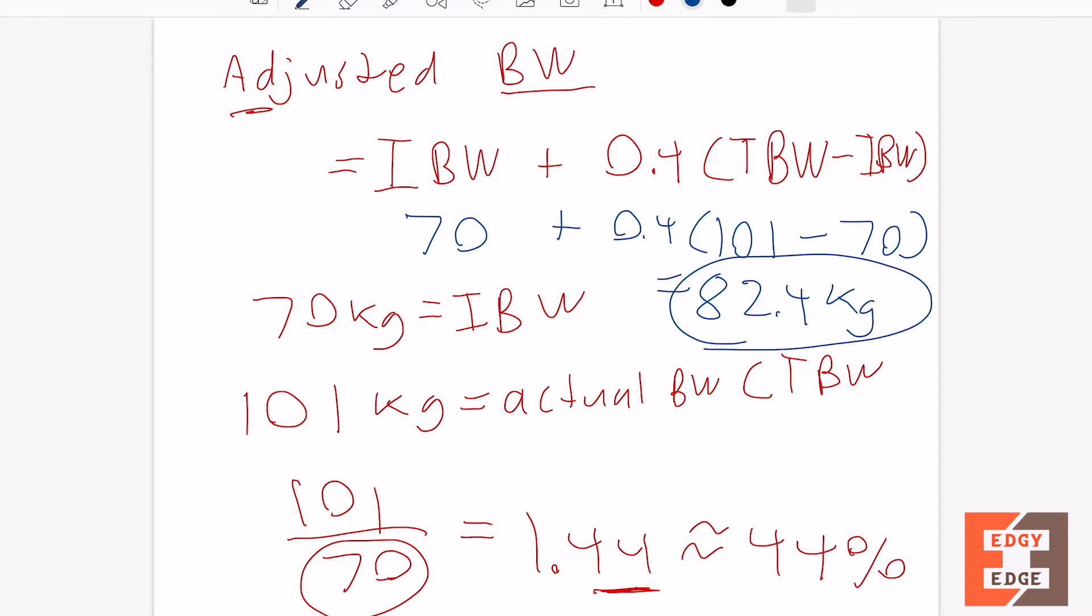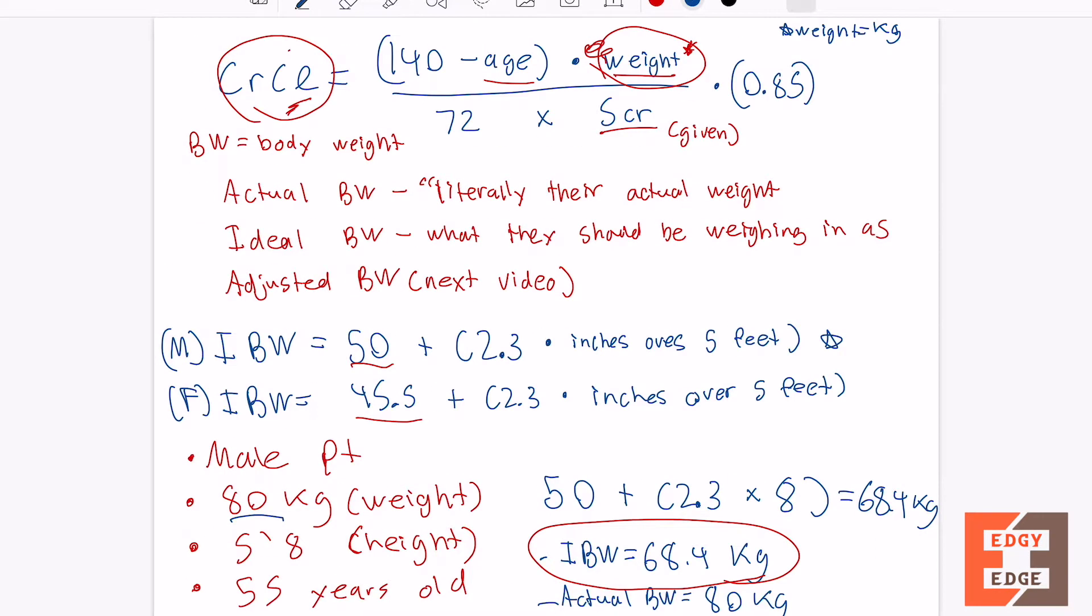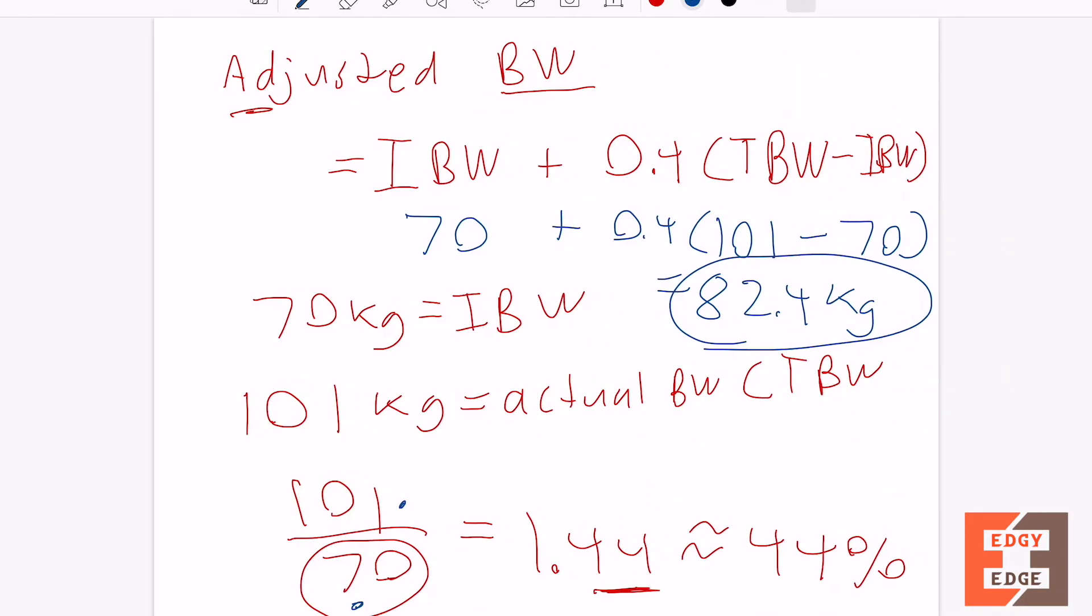Do you see how 82.4 is in between 70 and 101? It's basically a meet me in the middle type of formula where both actual body weight and ideal body weight is not an accurate measure when you're using it to calculate creatinine clearance in the Cockcroft-Gault equation.